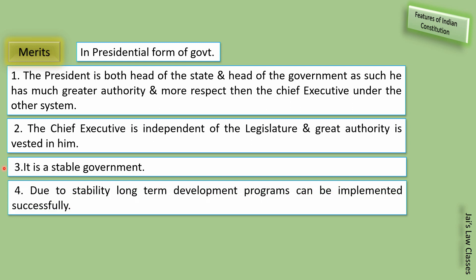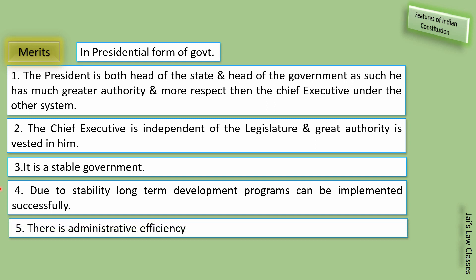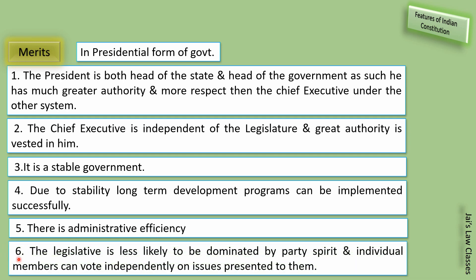The president is directly elected for a fixed 5-year term, so government remains stable. Due to stability, long-term development programs can be implemented successfully — jaise flyovers ya bridges banane hain jinko time lagta hai, unke success hone ke chances zyada hoti hain. There is administrative efficiency and the legislature is less likely to be dominated by party spirit; individual members can vote independently on issues.